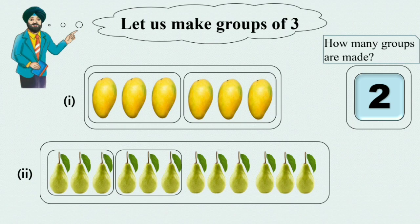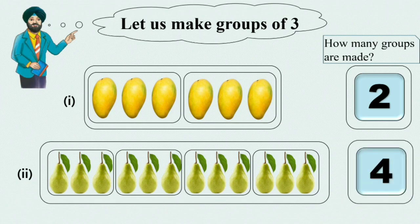Still we have some pears out of groups. Now we will make 3rd group of pears. Still we have more pears and this is the 4th group of pears. As you can see 4 groups of pears are ready. So write 4 in the box.